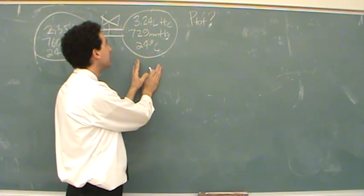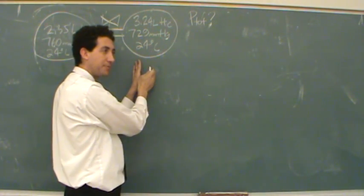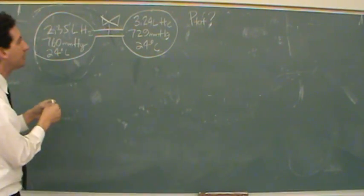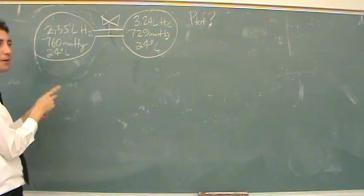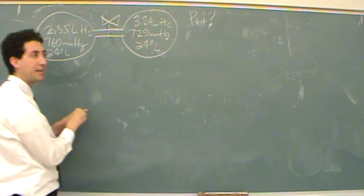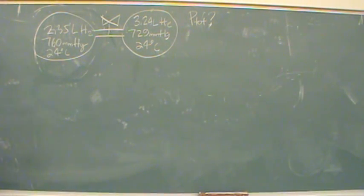Then we're going to find the moles of this using the ideal gas law because we have volume, pressure, temperature. And then we've got P total. After mixing, we're going to sum those moles, sum the volumes, and use the ideal gas law to find P total. That's our flow, that's what you'll see me do.